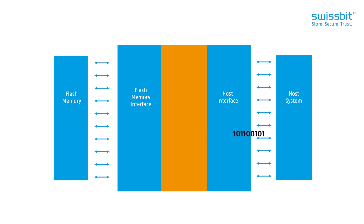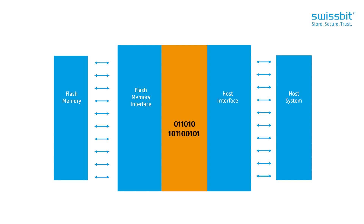When transferring user data onto the flash memory, the controller adds additional overhead data to the user data. This additional data comprises parity bits for error correction coding and mapping data, which allows it to be found again later. The controller then gets feedback from the flash memory when the data was successfully stored.